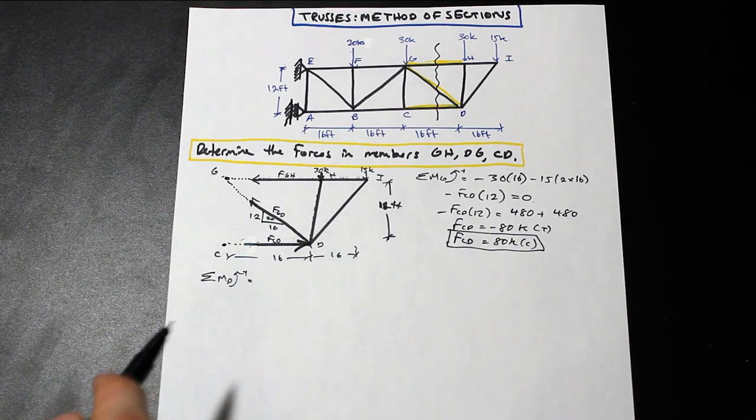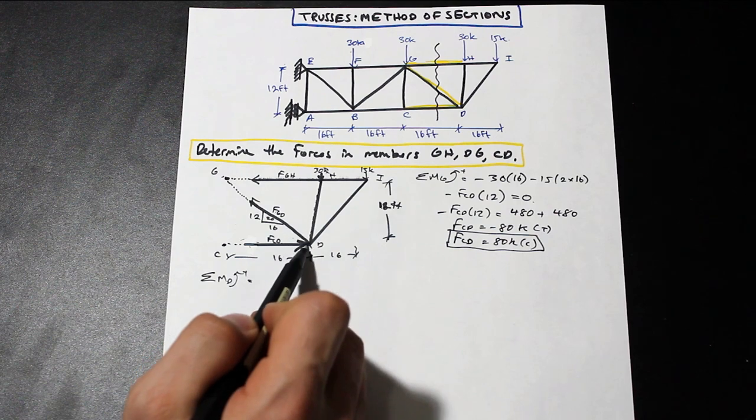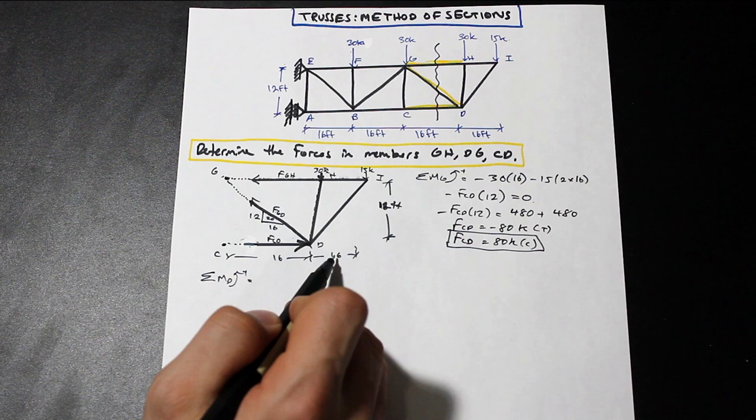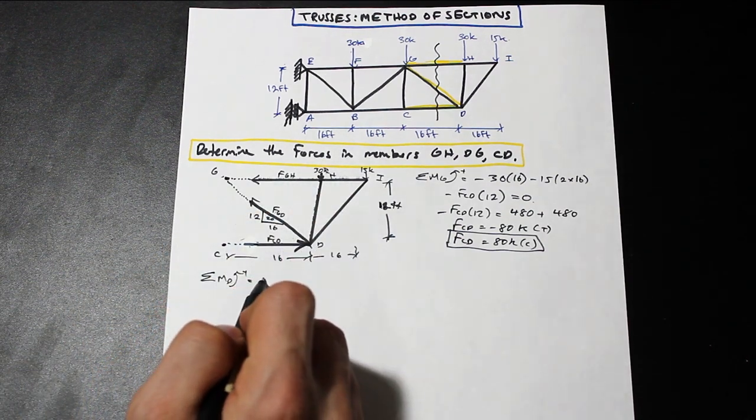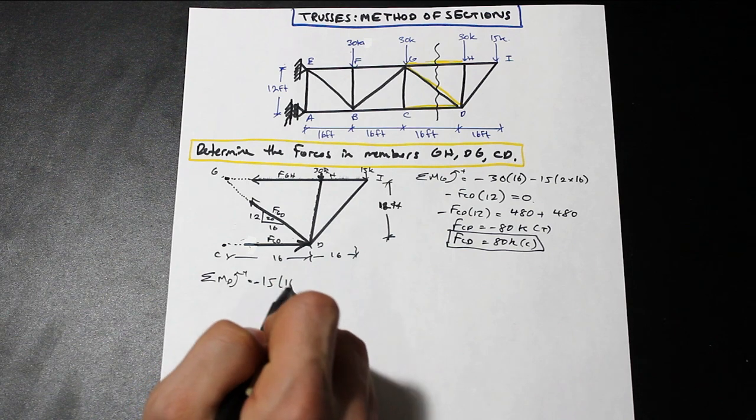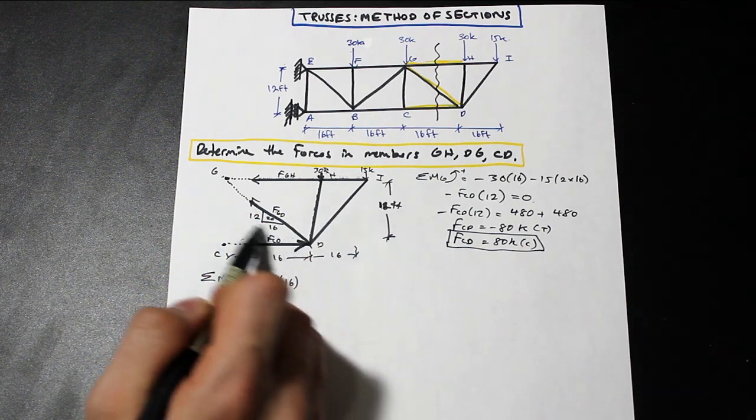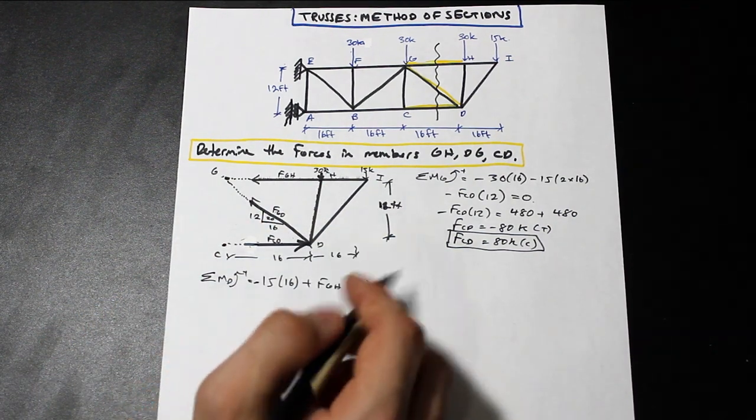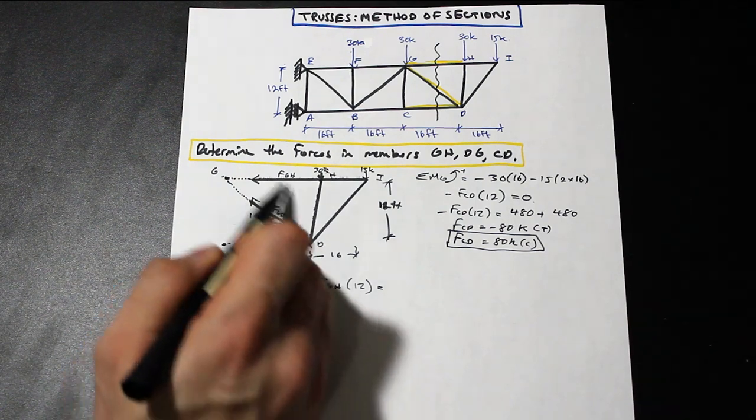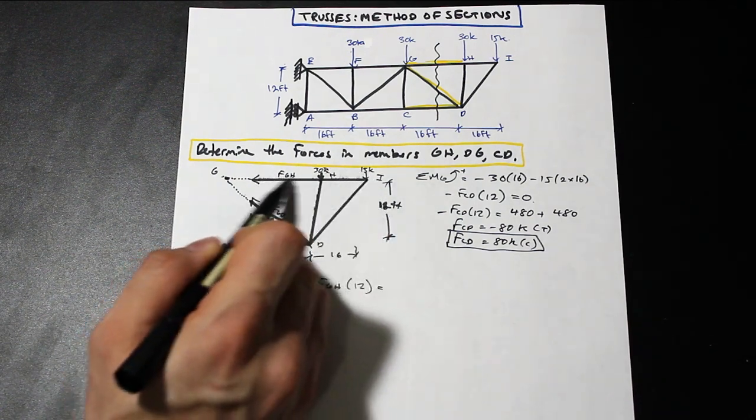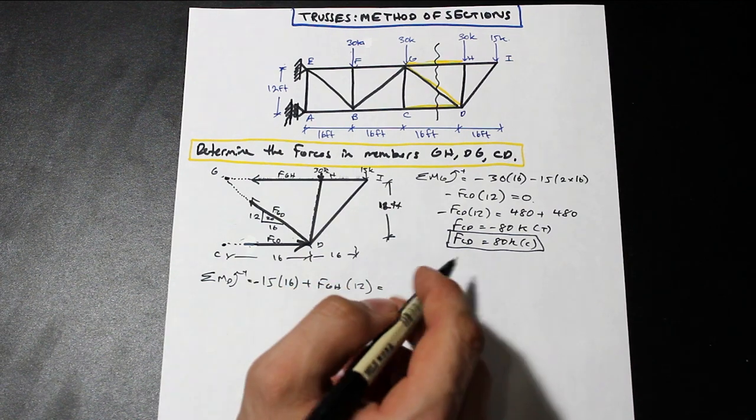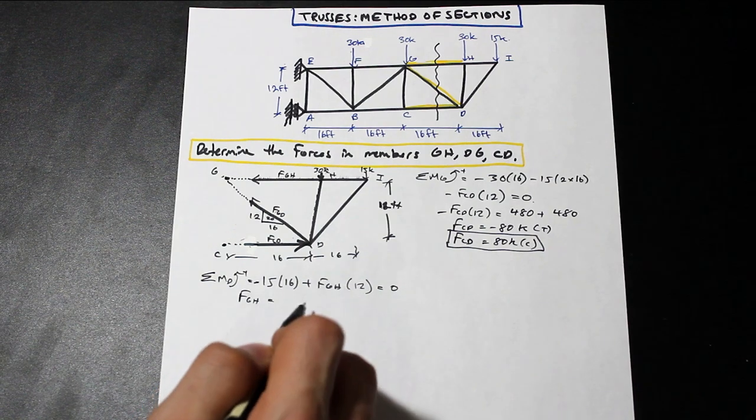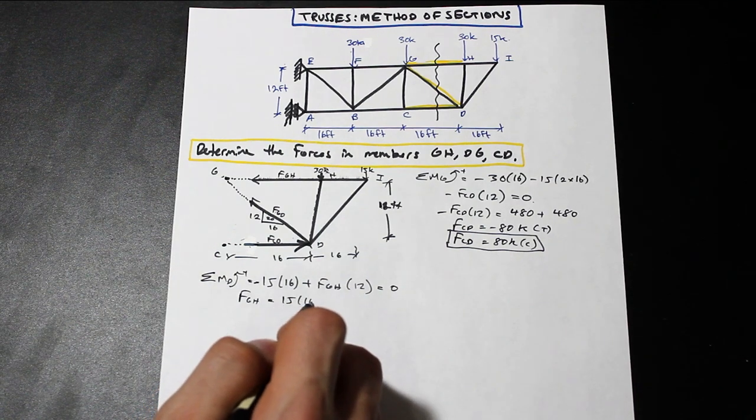Well, we have this 30 kip, but that's going through the line of action, so there's no moment there. We do have this 15, which is 16 feet away. That's in the opposite direction, so we have 15 kip negative times 16. We have FGH here. FGH is actually in the positive direction, and it's 12 feet away. And do we have any other forces? We don't. So this and this are the only forces that have any eccentricity at point D, and that is all equal to zero. So if we solve for FGH, we're going to have 15 times 16 over 12.